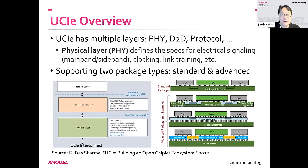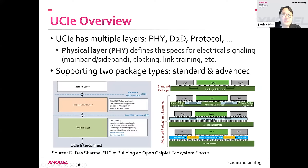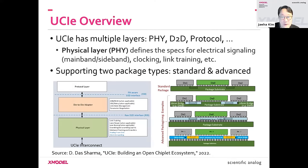The physical layer defines how voltage and current are specified, how clocking distinguishes between different bits, and how to perform training on various parameters in the interface. UCIe defines two package types: standard and advanced. The differences stem from the type of package — for example, 2.5D integration on an interposer versus 3D integration using TSVs or more advanced interconnect structures like EMIB.